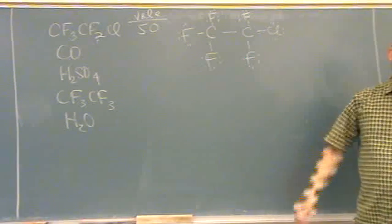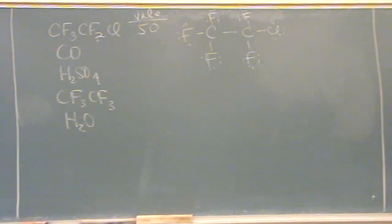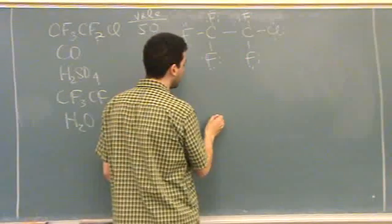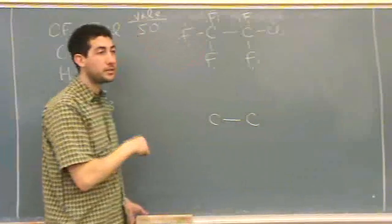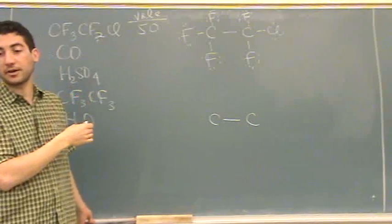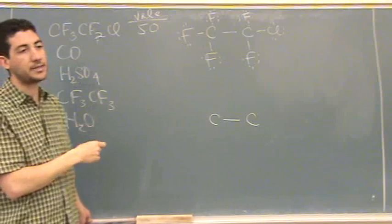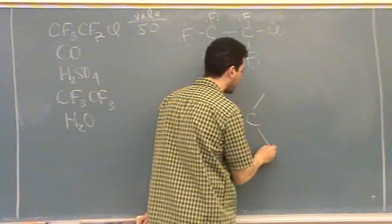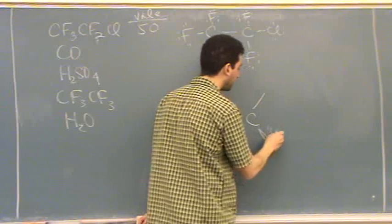What's the shape on the carbon? So how many groups are on each carbon? Four. So it's tetrahedral. Each carbon is tetrahedral. If you wanted to draw this in 3D, I would make the backbone the carbons in the plane, and then draw the rest of them according to your tetrahedral shape.